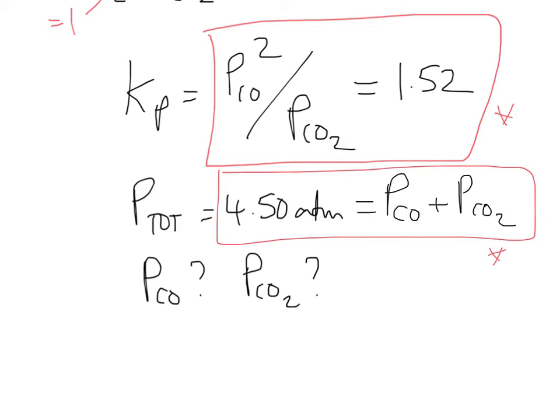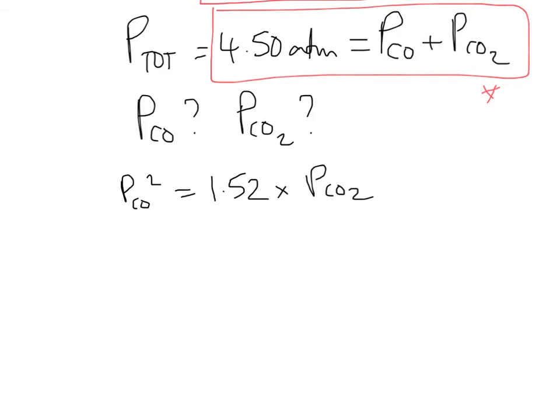So what's the best way to solve for this? There's lots of ways we can do it, but what we can do is we can take one of these equations, so for instance we can take this top equation, and we can rearrange for the partial pressure of CO2. So the partial of CO squared is equal to 1.52 times the partial of CO2. So I've just basically multiplied both sides by the denominator. And then I could go ahead and solve for the partial CO2. That's just the partial of carbon monoxide squared over 1.52.